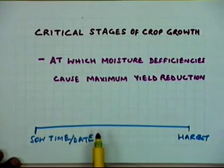The total crop growth period can be divided into different stages, and some stages are more sensitive than others. Those stages where moisture deficiency causes maximum yield reduction are defined as the critical stages of crop growth. These critical stages vary from crop to crop.